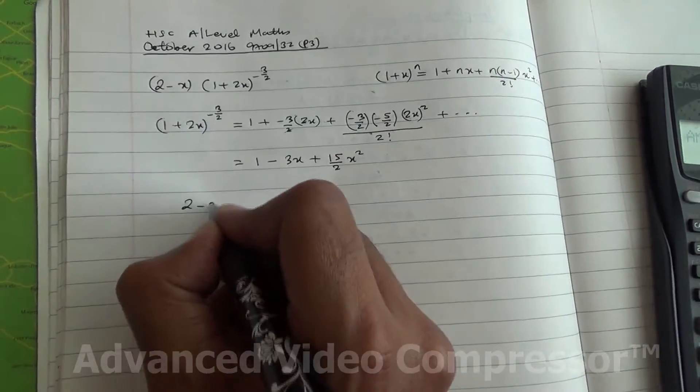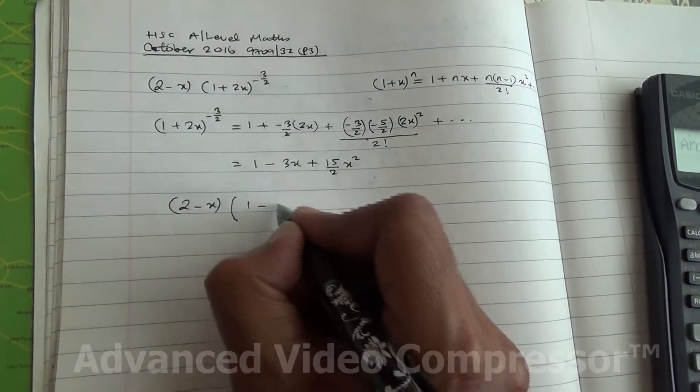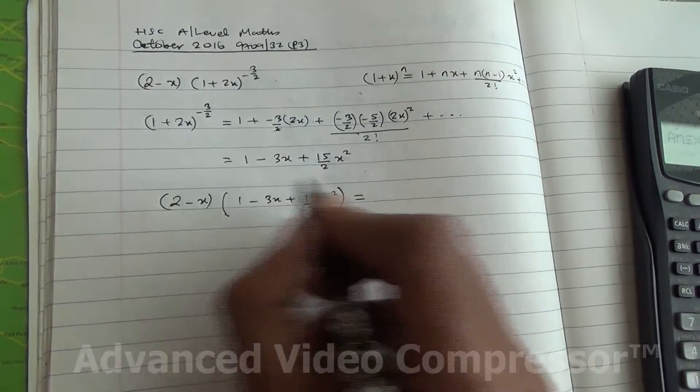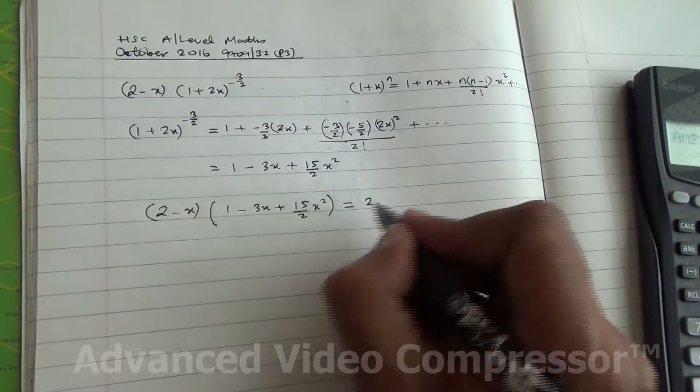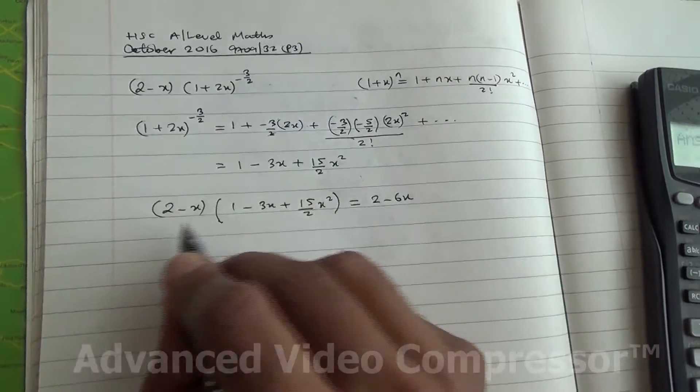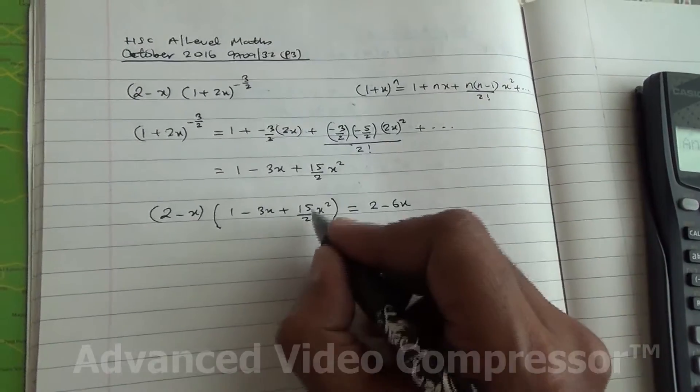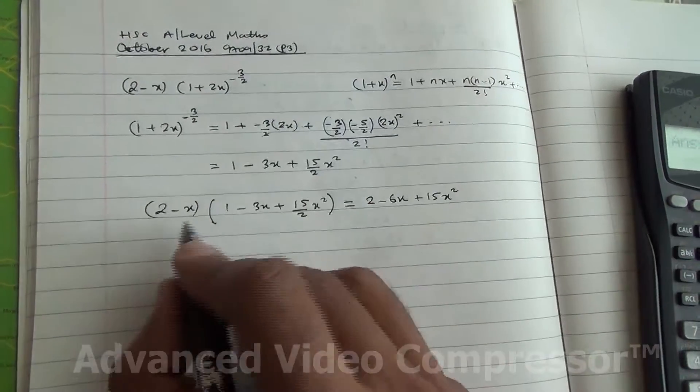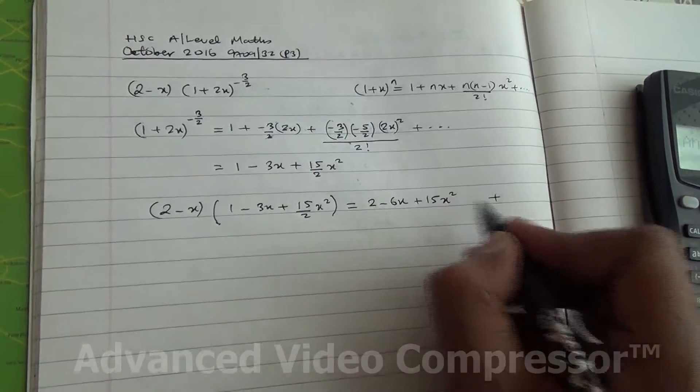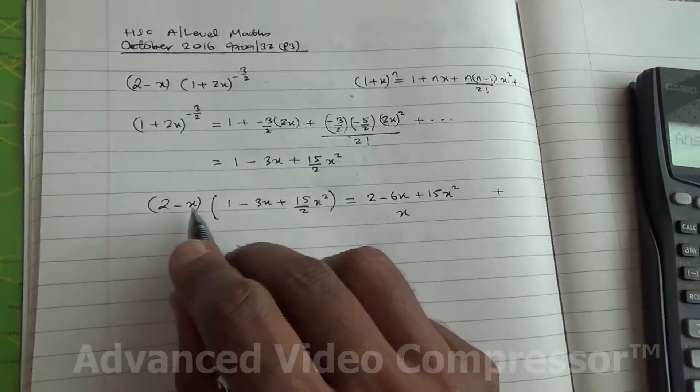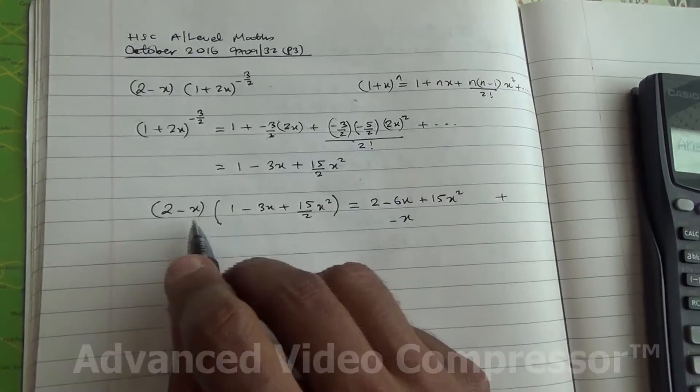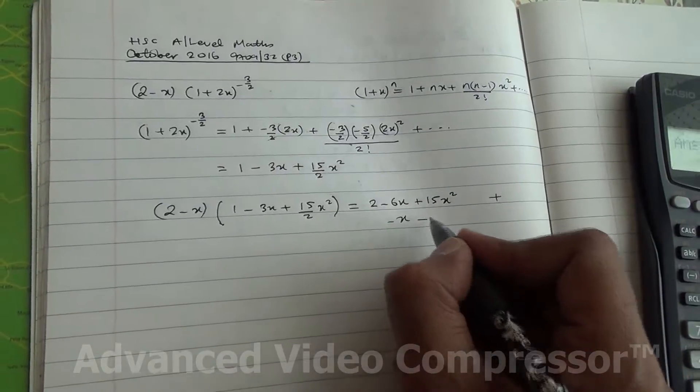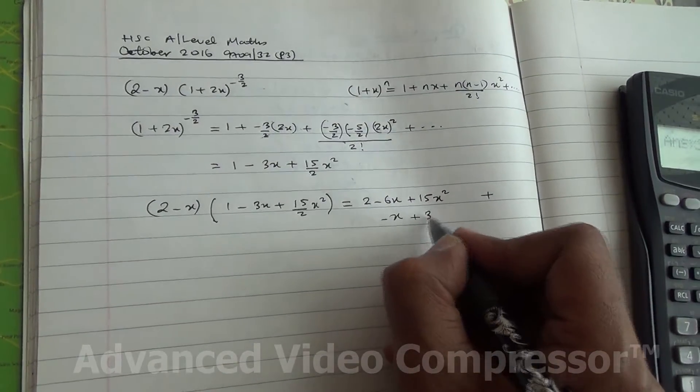So therefore, we have (2-x) times (1 - 3x + (15/2)x²). 2 times 1 is 2, 2 times -3x is -6x, 2 times (15/2)x² is 15x². And x times 1 is x, so you're going to add then minus x, I mean x times -1 is -x. -x times -3 is plus 3x².